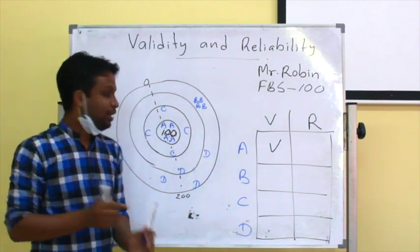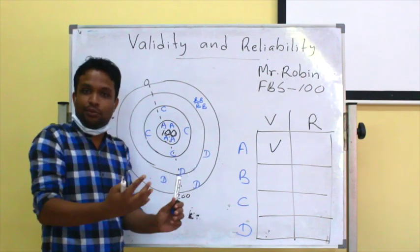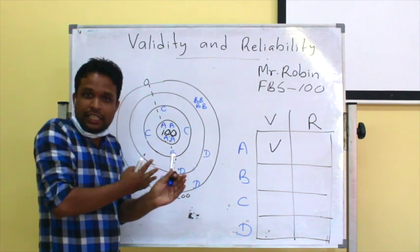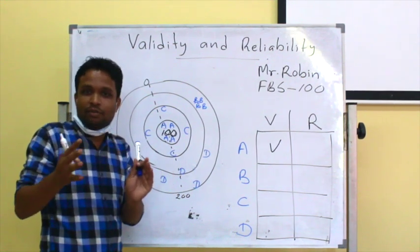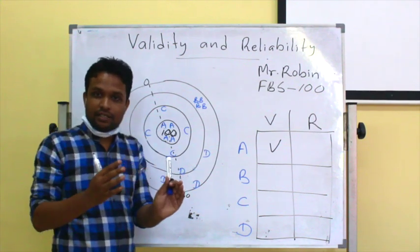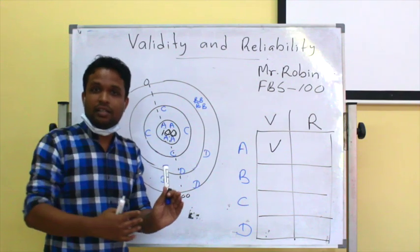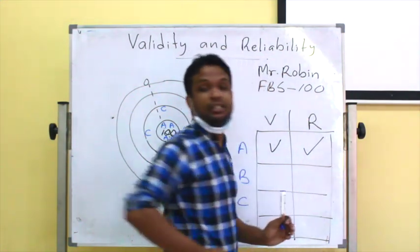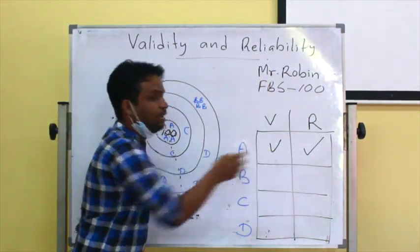Test A has also repeatedly produced the same result. It produced exactly similar values to 100 and produced the same result in repetitive measurements. So we can call that a reliable test. Therefore, test A is both a valid test and a reliable test.